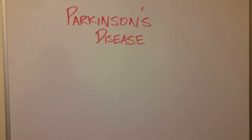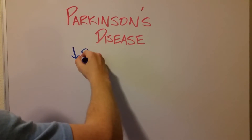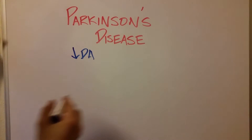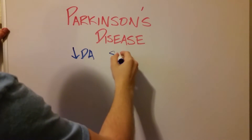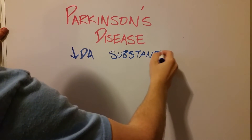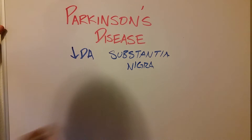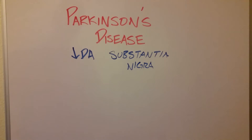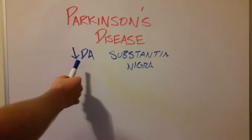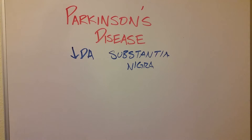Parkinson's disease — what causes it? The gist of it is that there's a decreased amount of dopamine in the brain, specifically in the substantia nigra, which is an area in the midbrain of the brainstem. You have a decreased amount of dopamine-creating cells inside the substantia nigra, and that leads to the symptoms of Parkinson's disease.